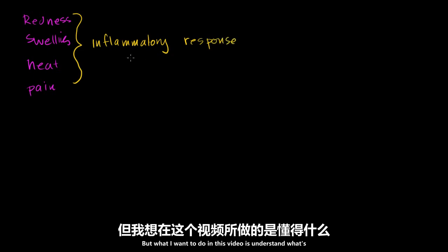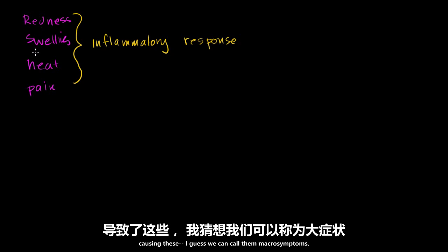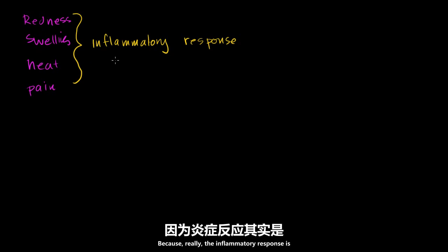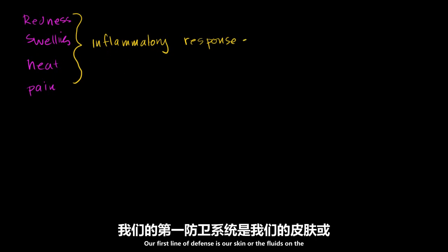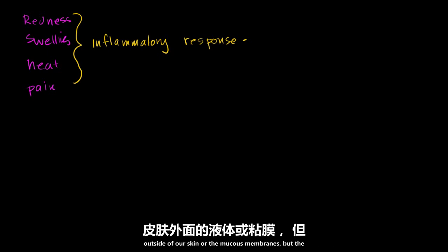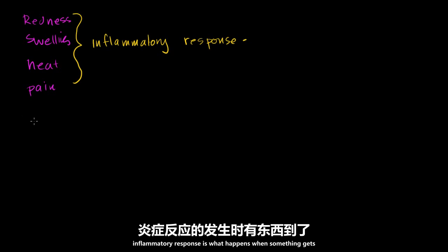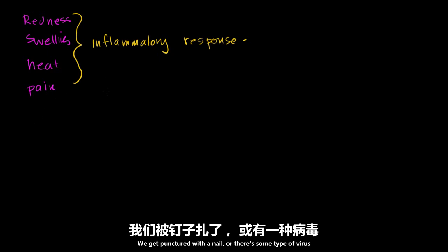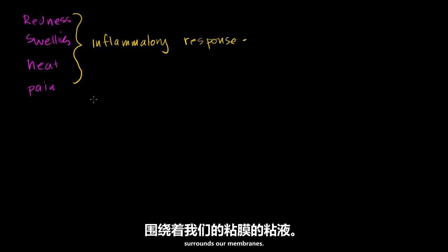What I want to do in this video is understand what's causing these macrosymptoms — what's happening at a cellular level. Because really, the inflammatory response is essentially the initial field of battle of our immune system. Our first line of defense is our skin or the fluids on the outside of our skin or the mucous membranes. But the inflammatory response is what happens when something gets beyond that.